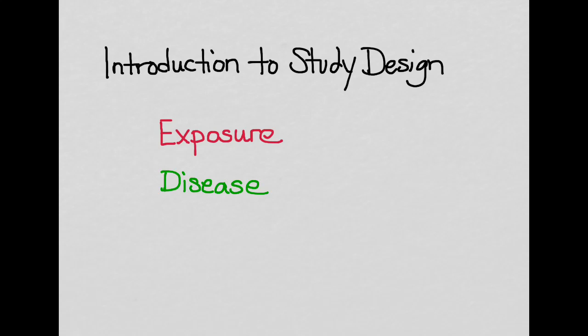Just to establish some terminology before we start, what we're going to be talking about is the relationship between an exposure and a disease. You've seen this before when we were looking at outcomes like relative risk. Overall, all of the study designs that we talk about are different ways of understanding the relationship between a particular exposure and an outcome or disease.